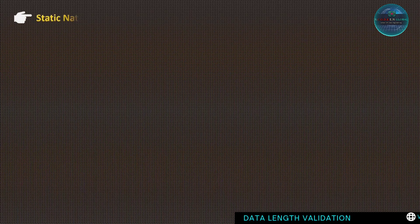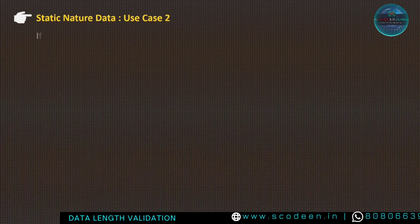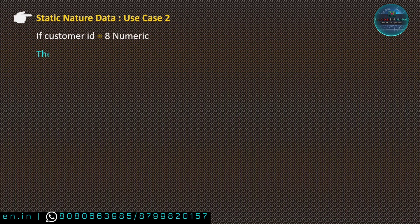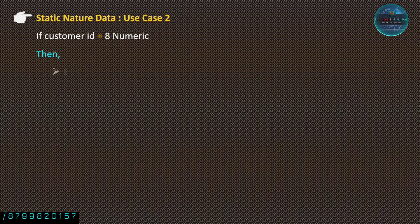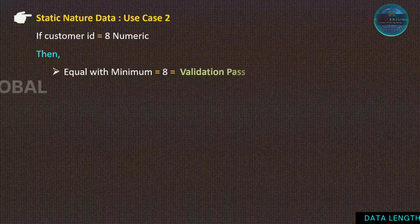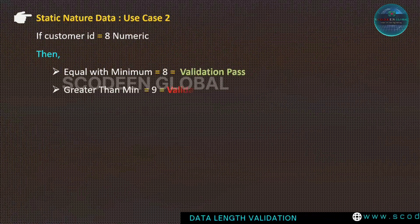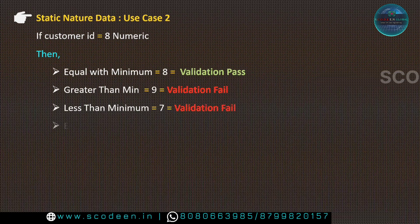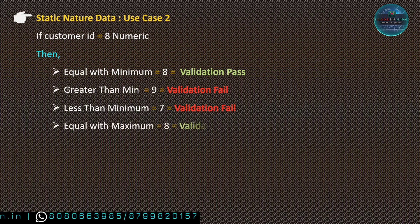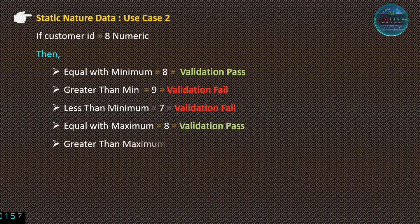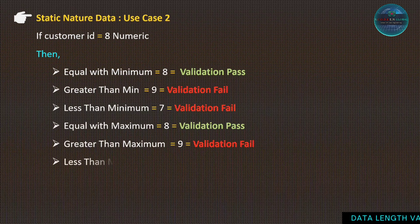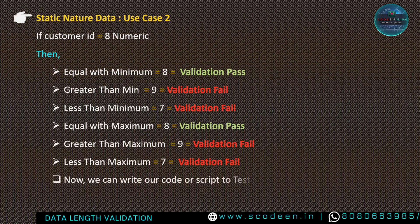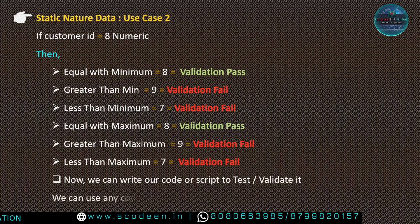Use case 2 is for static nature data. Assume customer number length is equal to 8 numeric. Equal with minimum — 8 — validation pass. Greater than minimum — 9 — validation fail. Less than minimum — 7 — validation fail. Equal with maximum — 8 — validation pass. Greater than maximum — 9 — validation fail. Less than maximum — 7 — validation fail. There is a big difference between static and dynamic nature data.